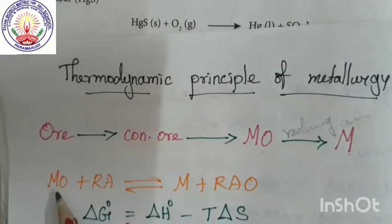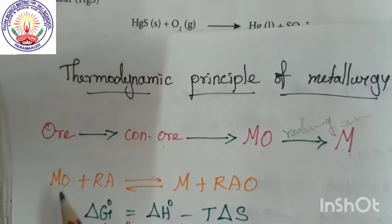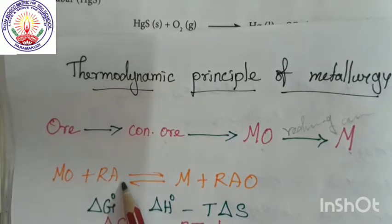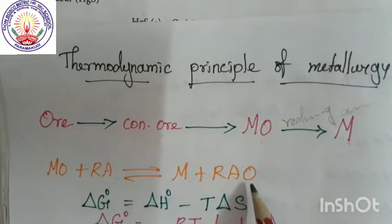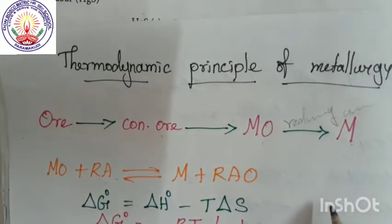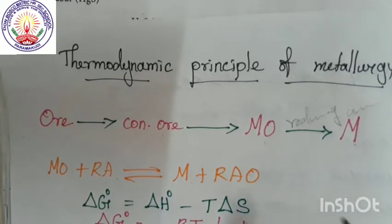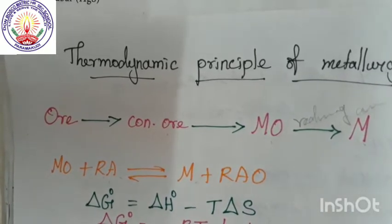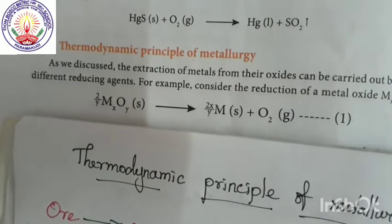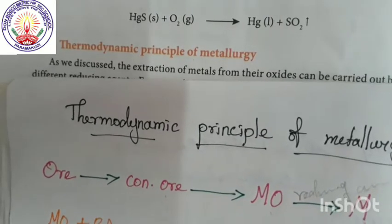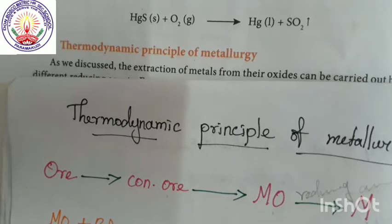Now look here. We take a metal oxide, use a reducing agent, and we get the metal. The reducing agent combines with the oxygen from the metal oxide. Ellingham has brought out this graphical representation — Ellingham's diagram — to help us. This helps us in the extraction of metal based on heat. This is very helpful.